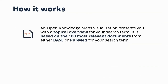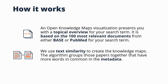A few words about how it works: an Open Knowledge Maps visualization presents a topical overview of your search term, based on the 100 most relevant documents from either BASE or PubMed. So for your research outputs to appear in Open Knowledge Maps, they need to be indexed by either BASE or PubMed. We then use text similarity to create knowledge maps — our algorithm groups papers that have more words in common in the metadata. The metadata about your output is, in many discovery tools, more important than the content itself.